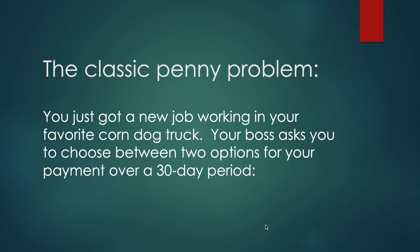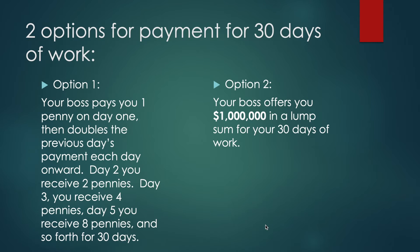So you have the classic penny problem. You just got a new job working in your favorite corndog trek. Your boss asks you to choose between two options for payment over a 30-day period. Option 1 is that your boss starts you with one penny on day 1 and then doubles the previous day's payment each day onward. Option 2 is your boss simply gives you $1 million.